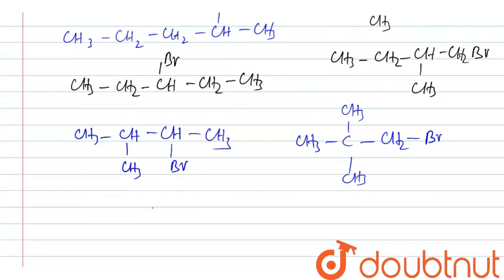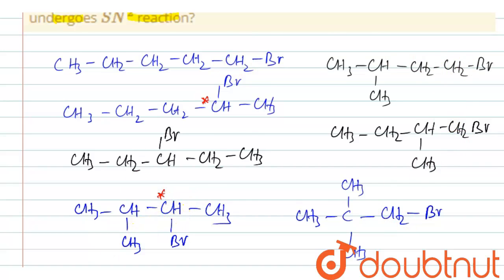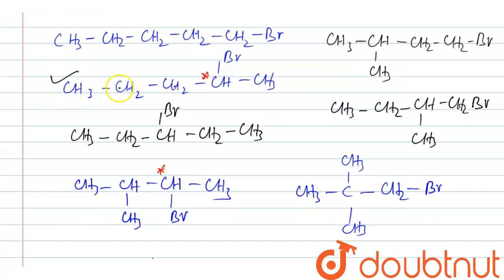Now let us see which isomers have a chiral carbon atom where bromine is attached. Here, this carbon is chiral. Then this one is not chiral, because the carbon atom is attached to two hydrogen atoms — here also two, here also two, here also two. But this one is also chiral. So these two compounds will show stereochemical inversion.